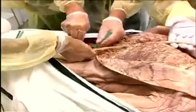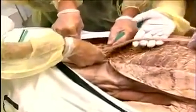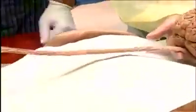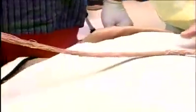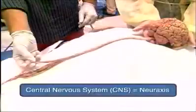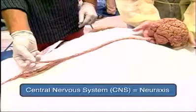We are going to the other end, removing the distal extremity of the spinal cord. This whole central nervous system is also called the neuraxis or cerebrospinal axis.